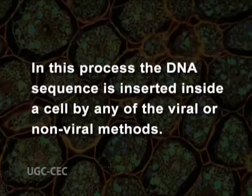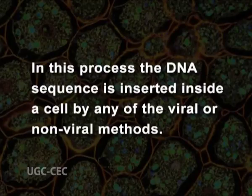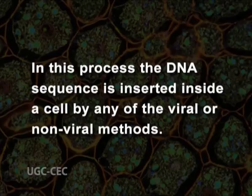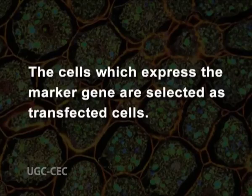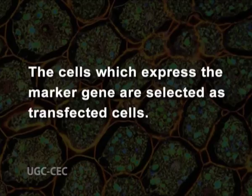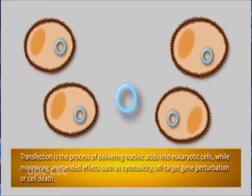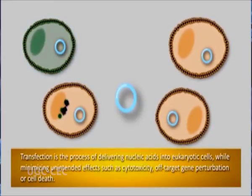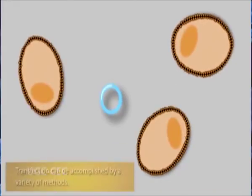In this process, the DNA sequence is inserted inside a cell by any of the viral or non-viral methods. The DNA which is deliberately inserted is usually a foreign gene coding a recombinant protein to be produced by the target cell. The transgene does not enter inside all the cells in the sample. In order to select the transfected cell, a marker gene is also inserted along with the gene of interest. The cells which express the marker gene are selected as transfected cells.